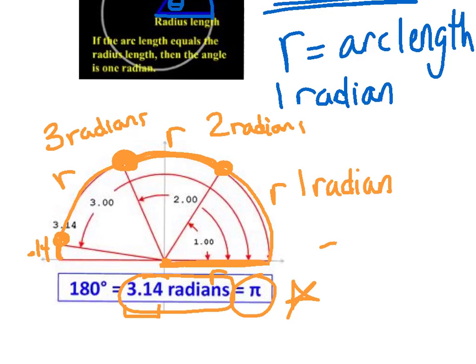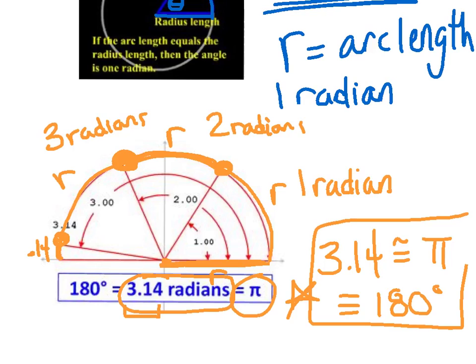And that's a huge deal. Now, 3.14 is equivalent to pi, which of course is equivalent to, if you ask yourself how many degrees is that, that's half a circle. So 180 degrees. These are all equivalent to each other.